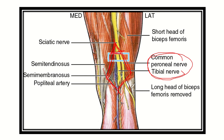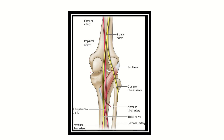The sciatic nerve divides into the tibial nerve and common peroneal nerve at the upper part of the popliteal fossa. Other structures visible in the popliteal fossa include: the popliteal artery, which is the deepest structure; the popliteal vein, just above it; the common peroneal nerve, lying most laterally; and the tibial nerve, which is most superficial.